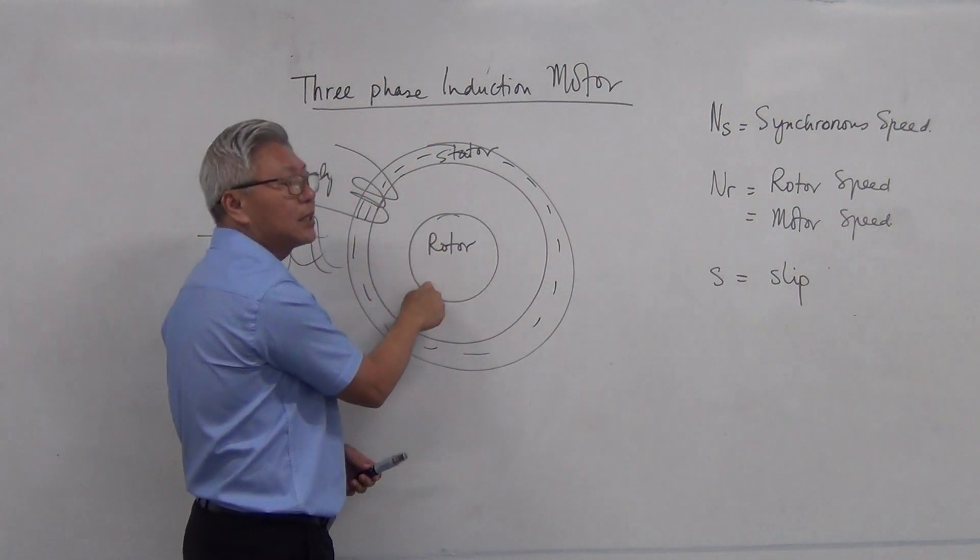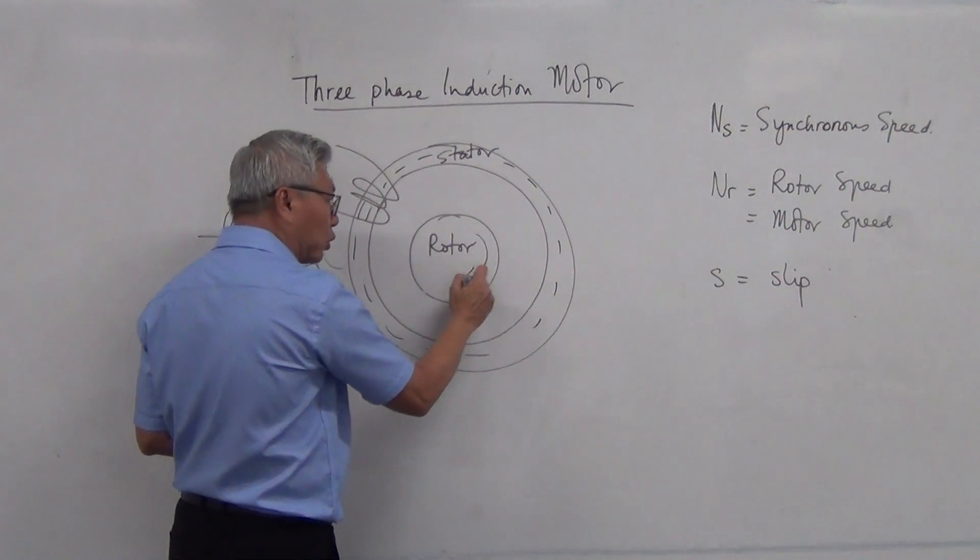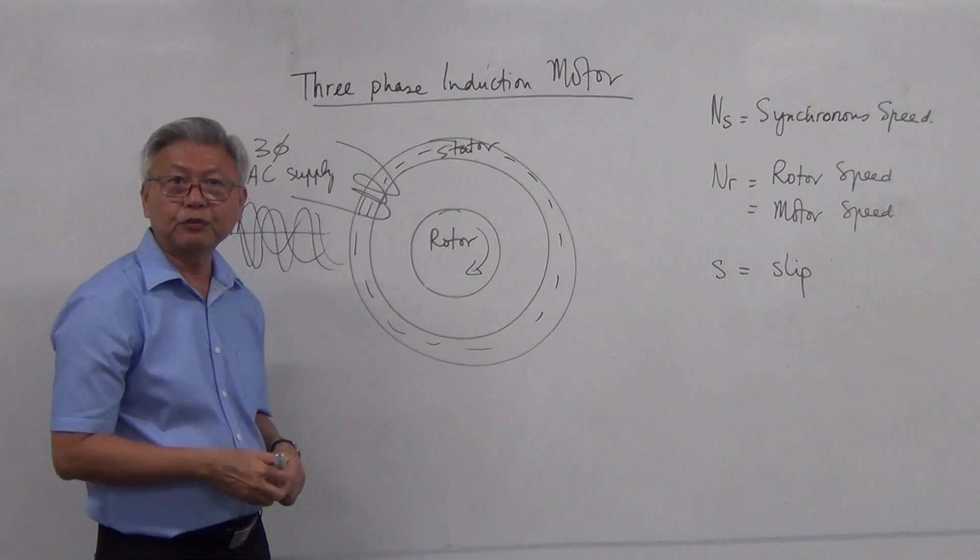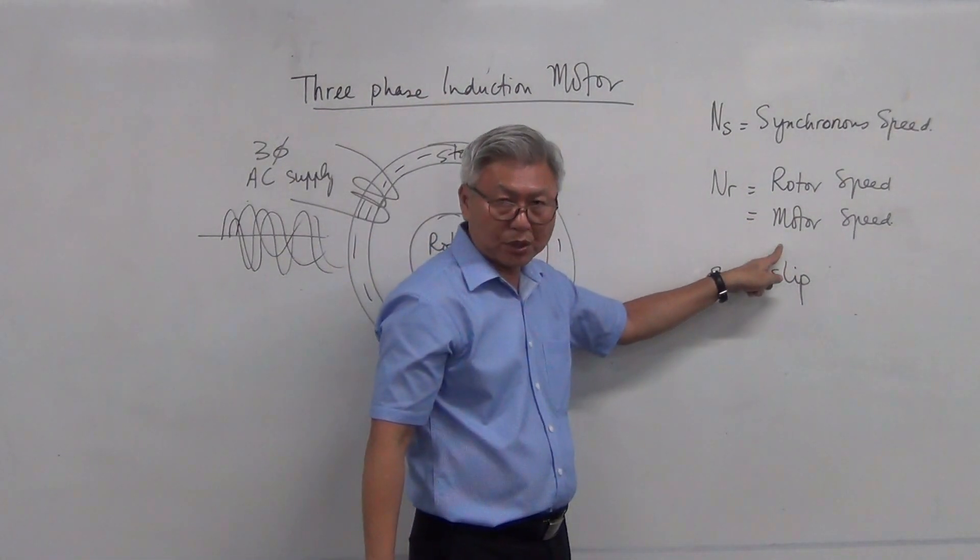So therefore, current having conducted the rotor, react with the magnetic flux, will then make the motor move, make the rotor move. And the speed of the rotor, we call it the rotor speed or the motor speed.